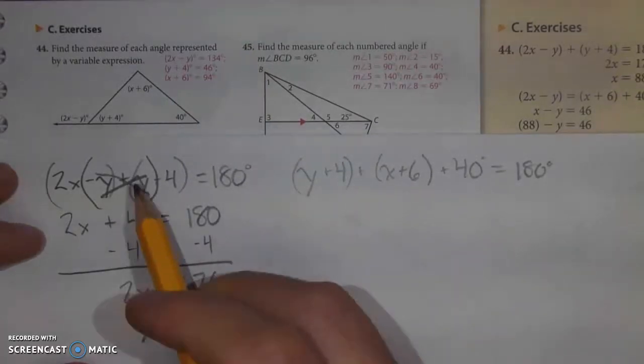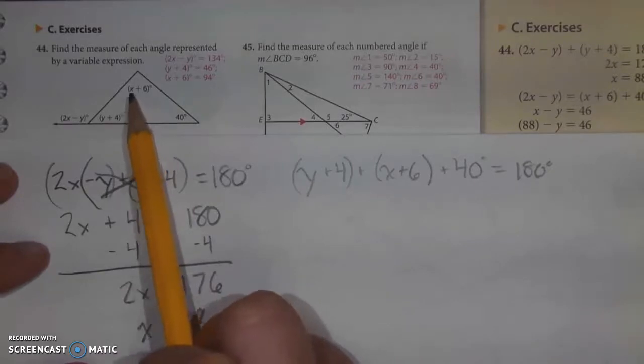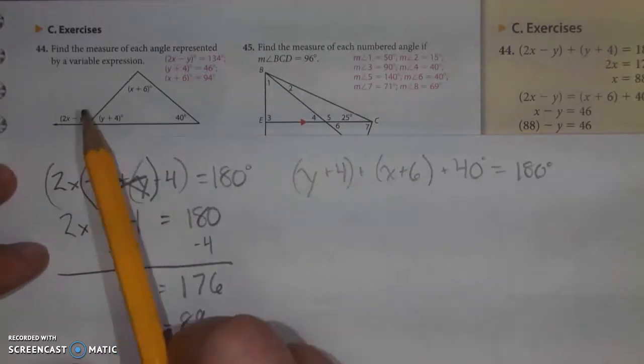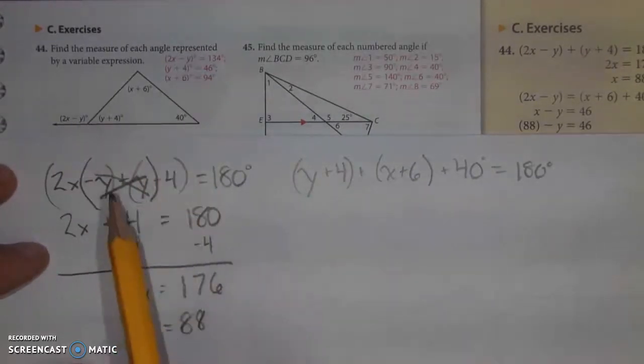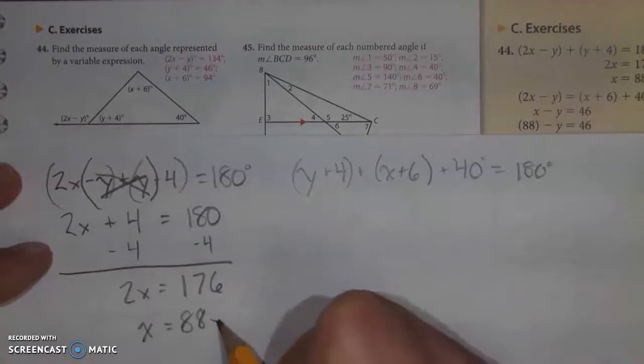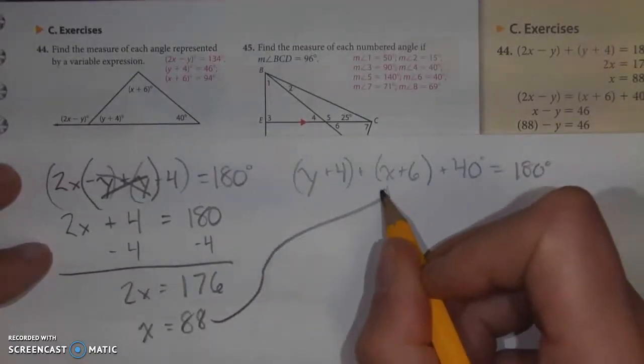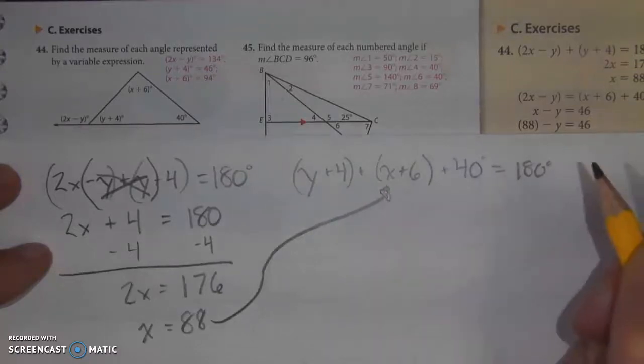Once I have that, I'm going to be able to substitute it in for this x plus 6. And I can also substitute it in here for 2x. But I'm still missing a y, so that means that there are several parts that I do not have. However, I can put my x value into my other equation and solve for that missing y.